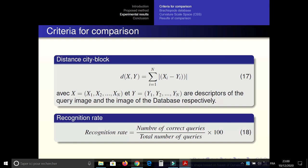The criteria of comparison. When we make a comparison between the proposed descriptor and the curvature scale space proposed by Mokhtarian, we used the city block distance and the recognition rate defined as follows.